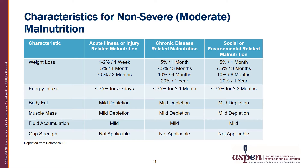In all contexts, energy intake is typically less than 75% of estimated needs, but for varying time frames. In acute illness or injury-related malnutrition, energy intake would be less than 75% of estimated needs for greater than seven days. For chronic disease-related malnutrition, it would be less than 75% for one month or greater. For social or environmental related malnutrition, less than 75% for three months or greater. Patients with non-severe or moderate malnutrition may have mild loss of body fat and muscle mass and mild edema, with no change in hand grip strength. The patient needs to demonstrate at least two clinical characteristics to be classified with moderate malnutrition.